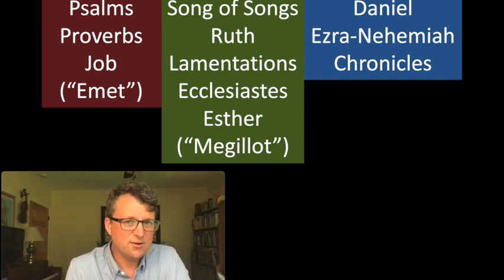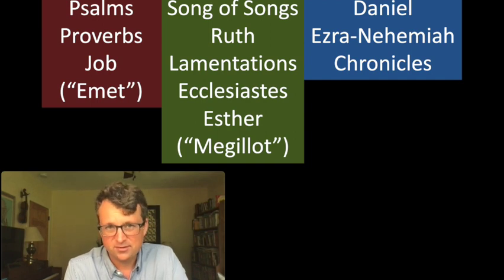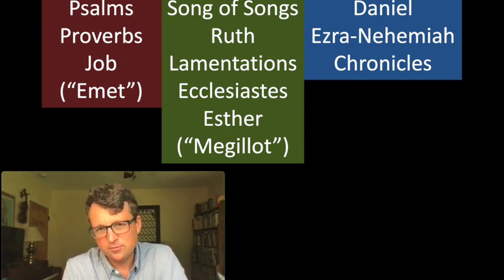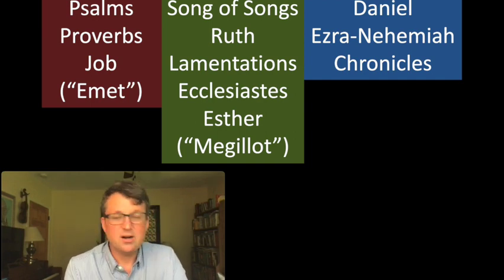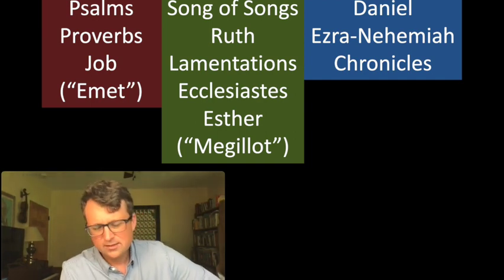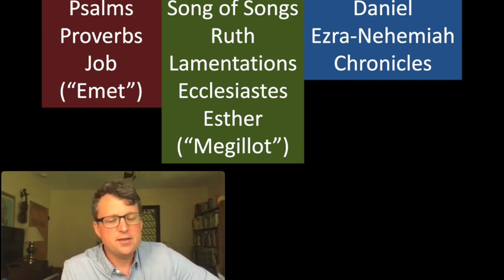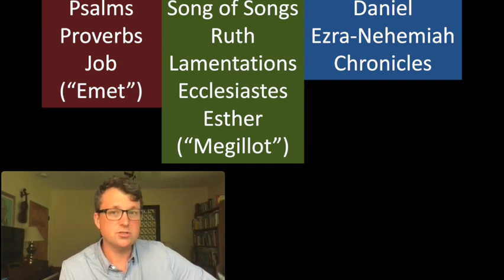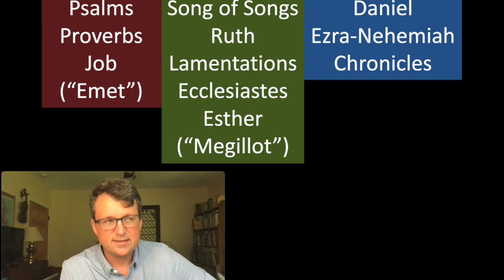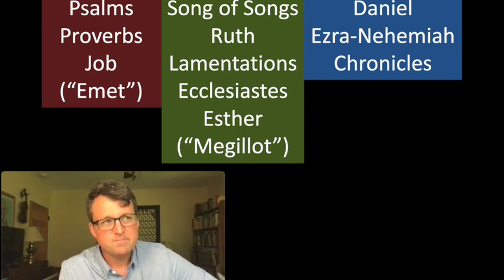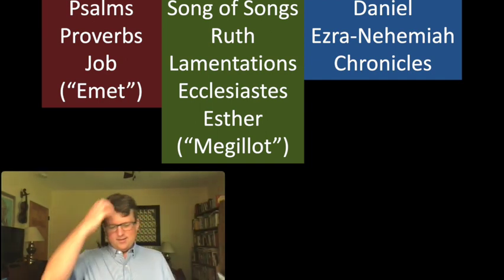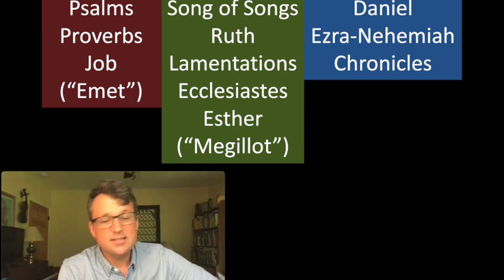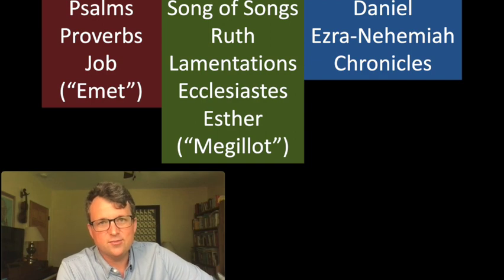None of these really share much with the other books, but all of them are collected together in the five scrolls because they're all read at important Jewish festivals. The Song of Songs is read at Passover. Ruth is read at Shavuot, or what's often called Pentecost in the Christian tradition, which was an ingathering of crops that takes place in the story of Ruth. Lamentations is read at Tisha B'Av — the ninth of Av — a day to remember the destructions of the first and second temples and the many trials that have fallen on the Jewish people over history. A day of grief, in a way.